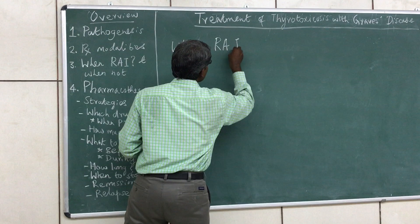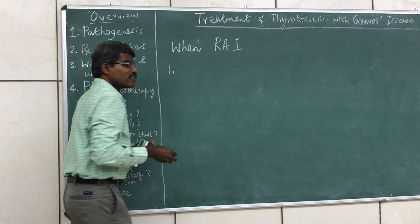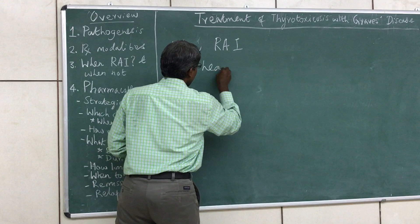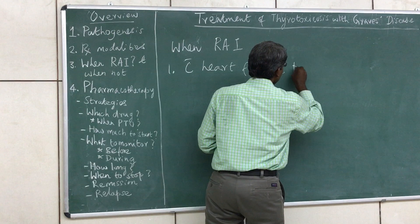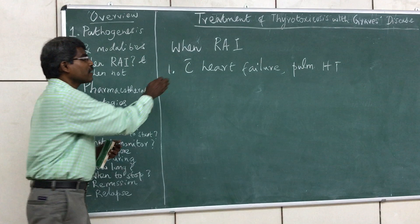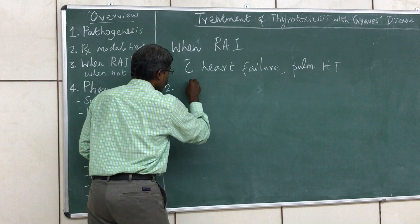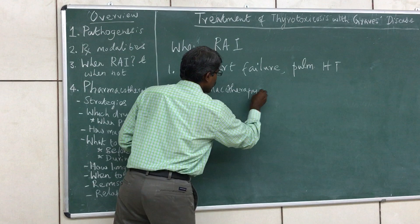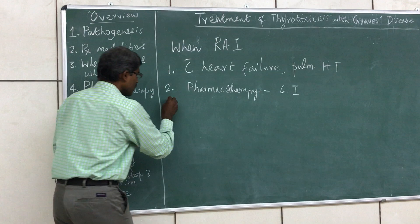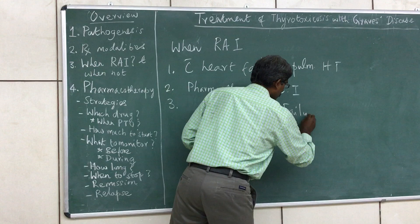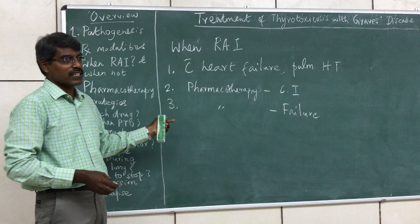Regarding which patients are most suited for radioactive iodine: first, patients with substantial comorbid conditions such as heart disease, heart failure, or pulmonary hypertension. Second, patients in whom pharmacotherapy is contraindicated. Third, when pharmacotherapy fails — if it does not maintain the patient in a euthyroid state, we need to change to radioactive iodine.